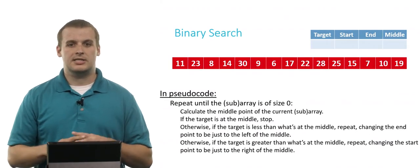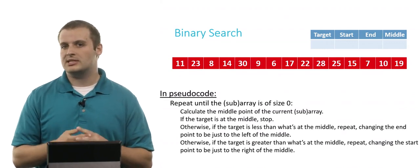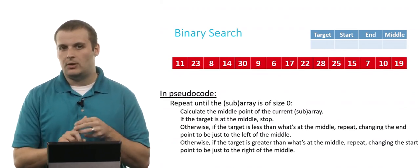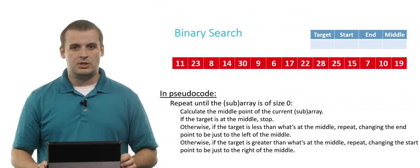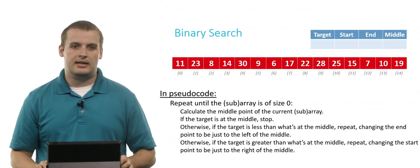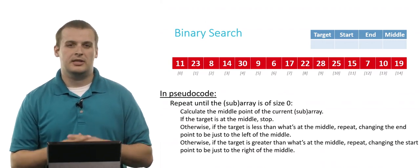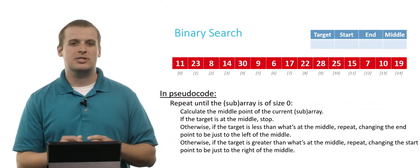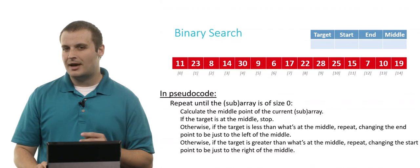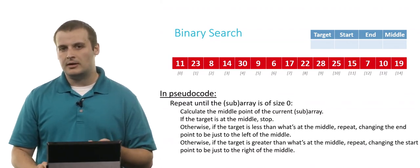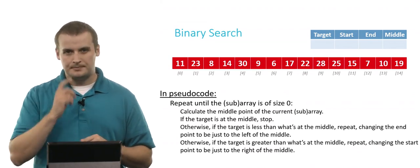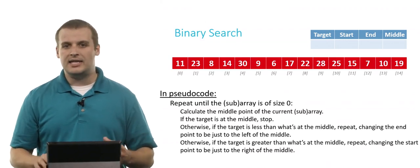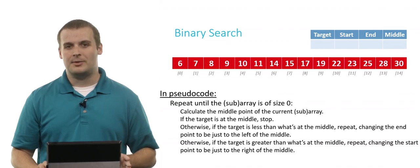Let's visualize this. There's a lot going on here, but here's an array of 15 elements. We're going to be keeping track of a lot more stuff this time. In linear search we just cared about a target, but this time we want to care about where we're starting to look, where we're stopping looking, and what's at the midpoint of the current array. We must have a sorted array before performing binary search — you can use any of the sorting algorithms we've talked about to get to that position.